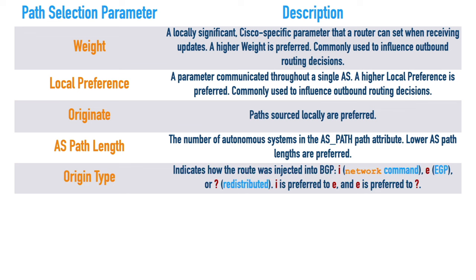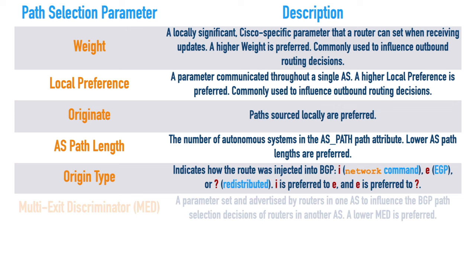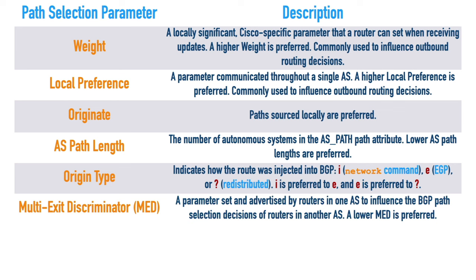BGP does have what we could call a metric - the MED, the multi-exit discriminator. But this isn't even considered until we have a tie on weight, local preference, originate, AS path, and origin code. We might see MED used when we have two connections going to a single ISP - a primary and a backup connection. We can use a lower MED on the preferred link and a higher MED on the slower link, which influences inbound path selection decisions from that ISP. Unlike local preference and weight, a lower metric is better.